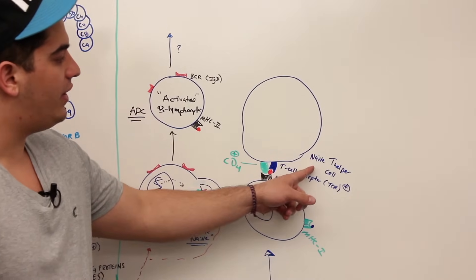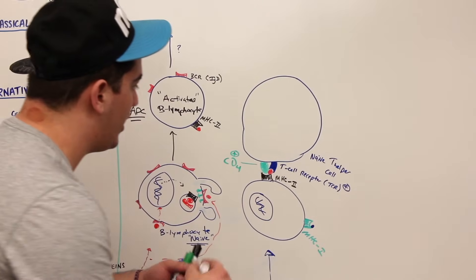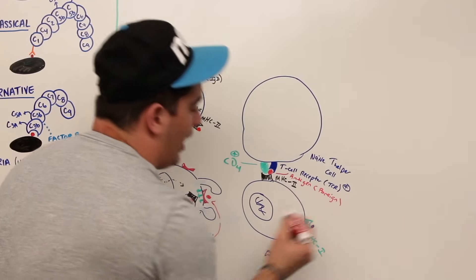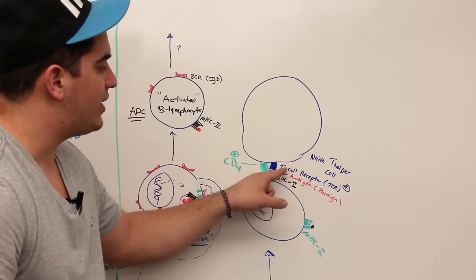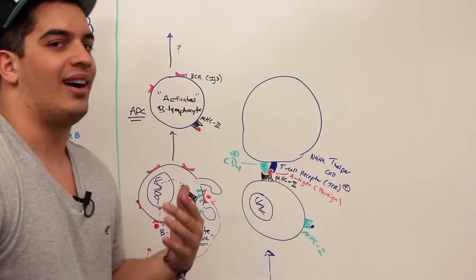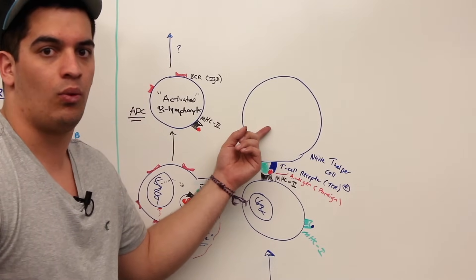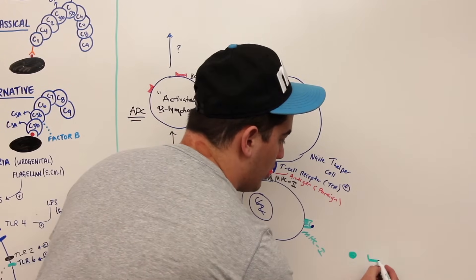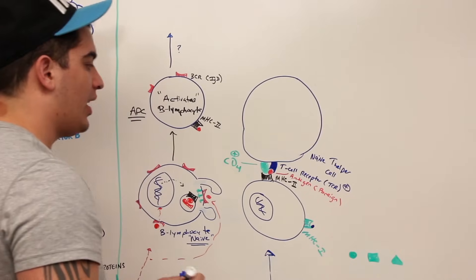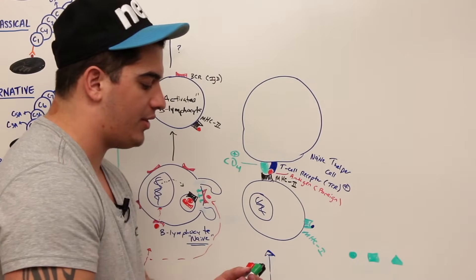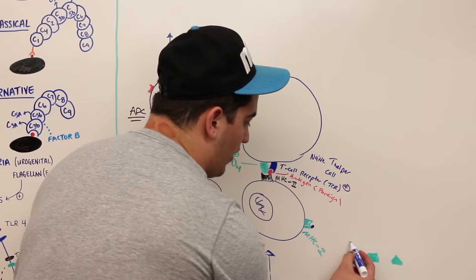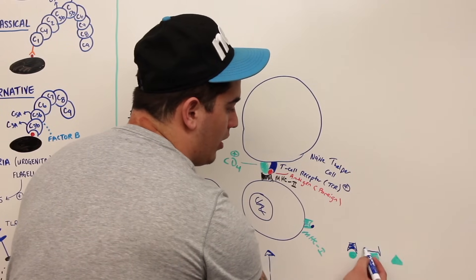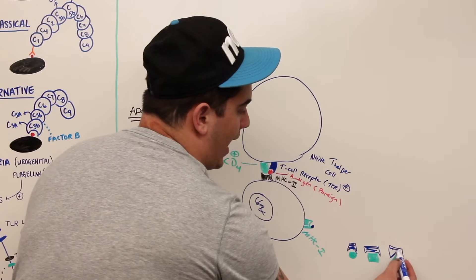The green protein is called cluster differentiation protein 4 — CD4. So this is a CD4-positive cell. We have a naive T helper cell: the T cell receptor responds to the foreign antigen, and every single T cell has different types of T cell receptors specific to each type of antigen — circular, square, or triangular — due to recombination.